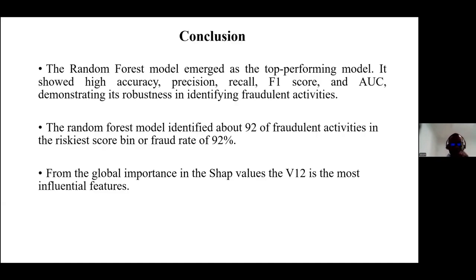In conclusion, I had three objectives. First, to determine the most efficient machine learning model — the random forest model emerged as the top performer. Second, to determine the percentage of fraud detected in the risk score bin after identifying the best model, which came out to be 92%. Third, from the global feature importance, V12 was identified as the most influential feature in the prediction of fraud.